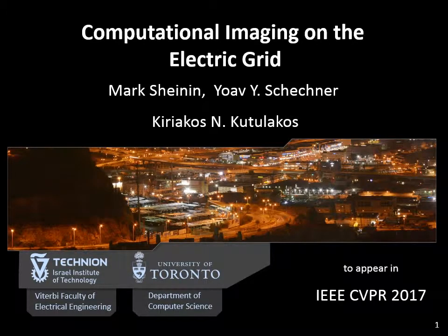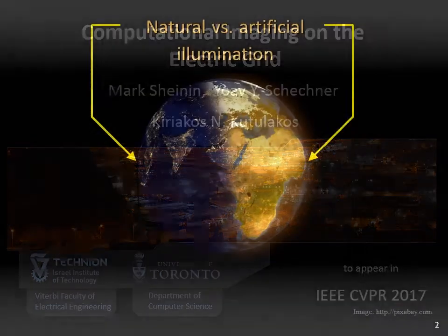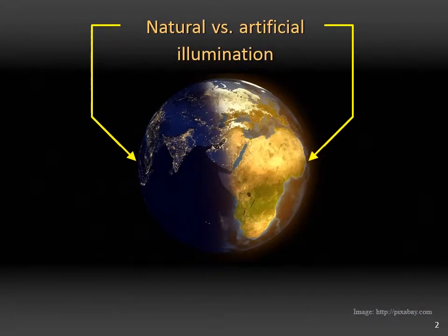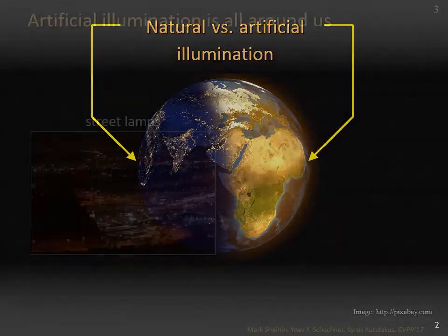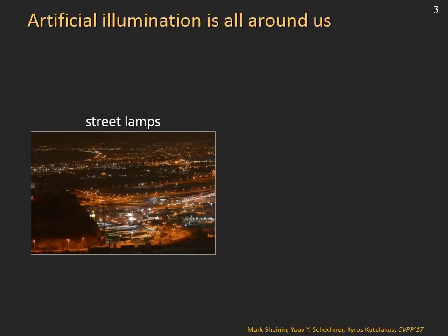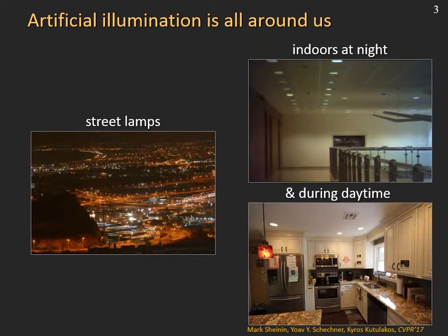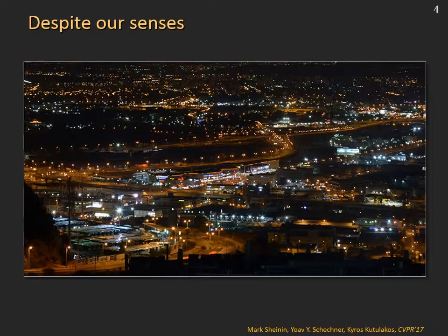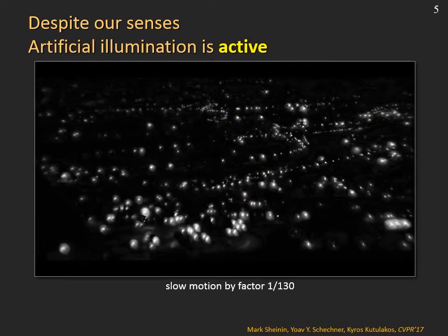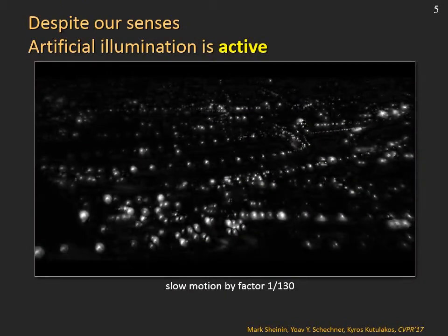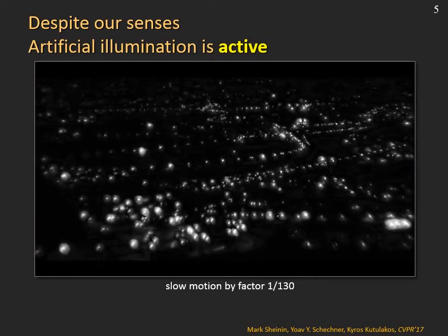Computational imaging on the electric grid. We spend about half our lives under artificial illumination. Artificial light is everywhere, from street lamps at night to our offices and homes during all hours. To our eyes these lights appear static, however in reality they are constantly flickering, as seen in this slow motion video of the scene.